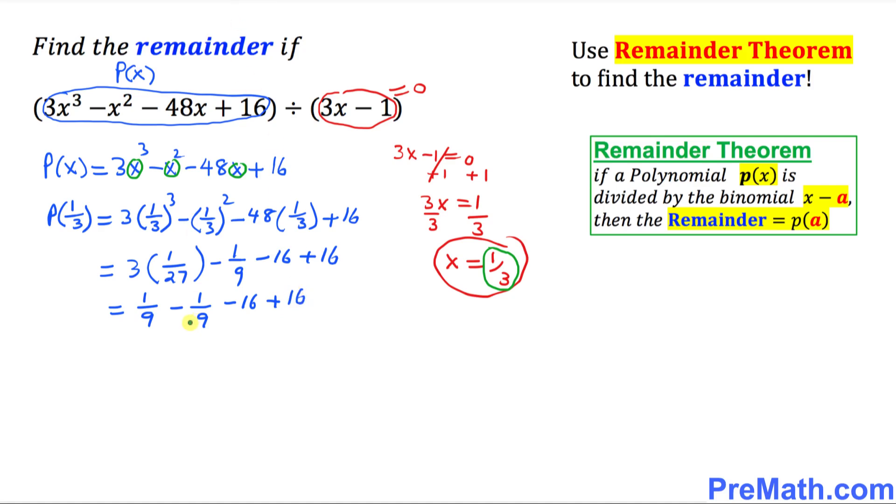As you can see, this positive and negative 1 over 9, they reduce each other to 0 and this is gone as well. So that means P of 1 over 3 simply turns out to be 0 and 0 is our remainder. So thus our remainder turns out to be 0 and that is our answer.